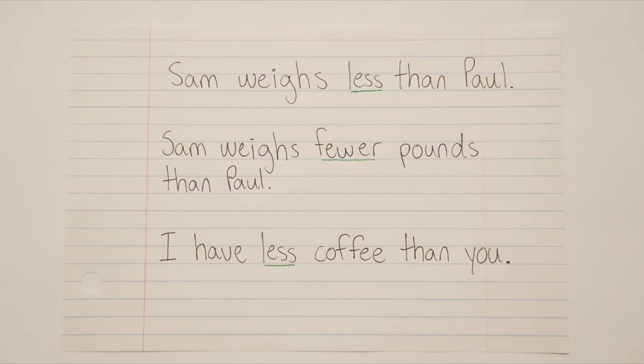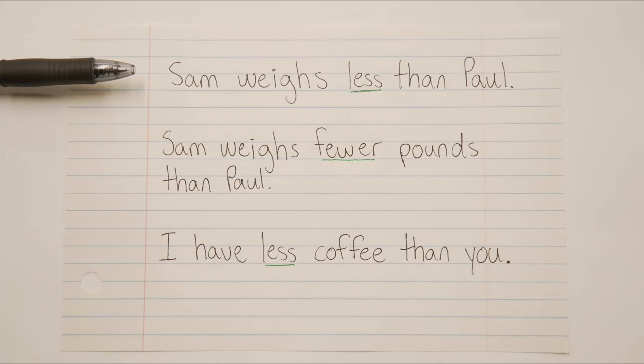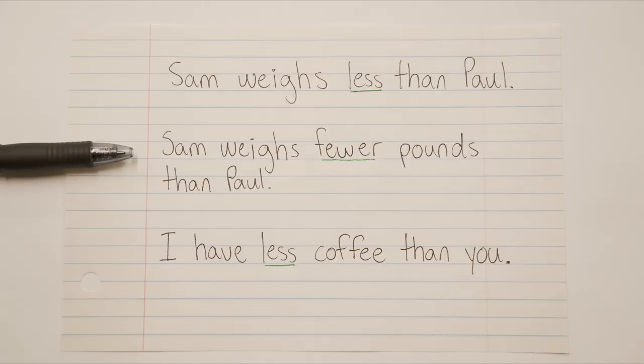But watch this: Sam weighs less than Paul. You might say, wait — we can count weight, right? Pounds, ounces, all that. Yes, you can count pounds and you can count ounces. But those are not the words that were used. We used the word weighs, and you cannot count that word. This is why you have to be literal. If you said Sam weighs fewer pounds than Paul, that'd be fine, because now you've got the word pounds, which is countable.